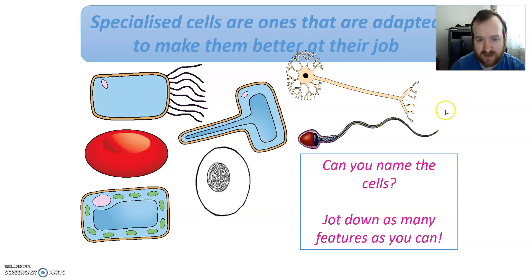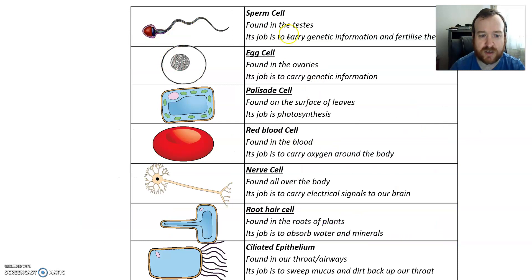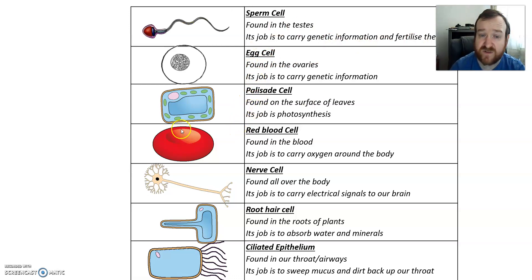So we've got a sperm cell — found in the testes, its job is to carry genetic information and fertilize the egg. Egg cells are found in the ovaries and their job is to carry genetic information. We've got palisade cells found on the surface of leaves — their job is to carry out photosynthesis, so they have lots of chloroplasts. We've got a red blood cell found in the blood — its job is to carry oxygen around the body.